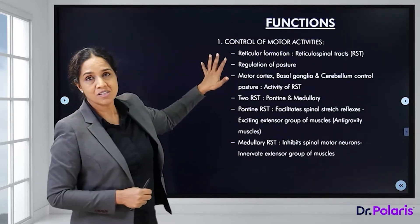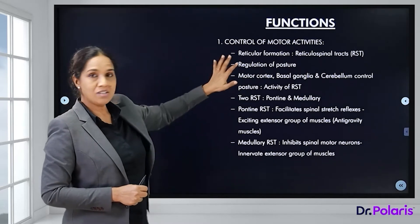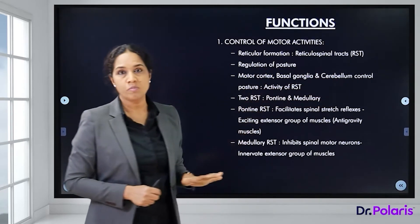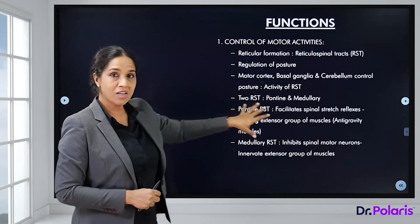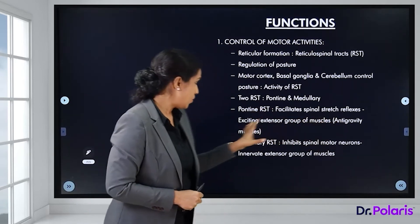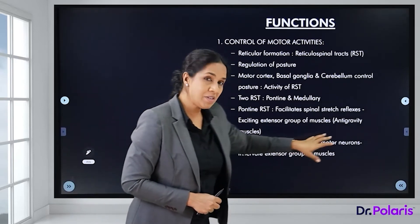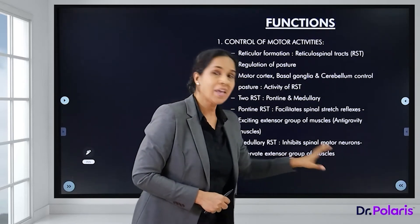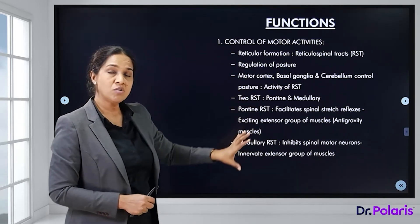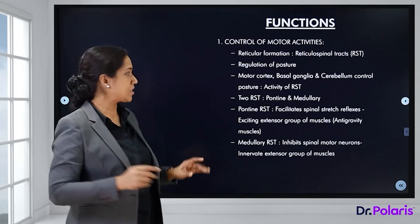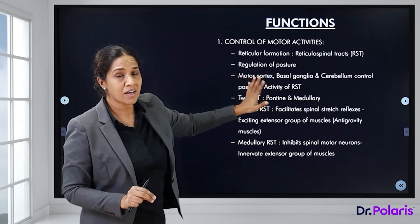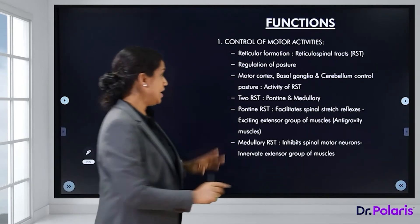Regarding the control of motor activities: the reticular formation, through the reticulospinal tract, regulates posture. The motor cortex, basal ganglia, and cerebellum control posture by influencing the reticulospinal tract. The pontine reticulospinal tract facilitates spinal stretch reflexes and excites extensor (anti-gravity) muscles, while the medullary reticulospinal tract inhibits the spinal motor neuron activity innervating extensor muscles.